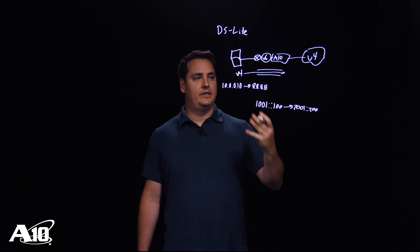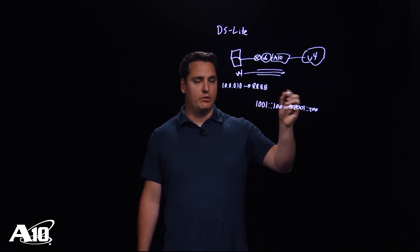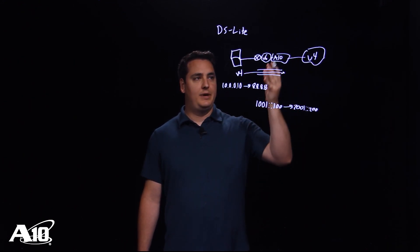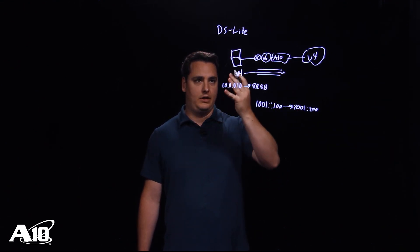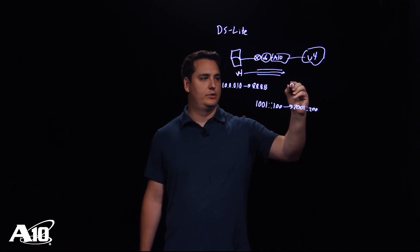When the A10 receives this traffic, it'll actually decapsulate, remove the v6 and because it's a CGN A10 device, it will actually NAT the private IP of the client into a public address. Let's say for example, 203.123.